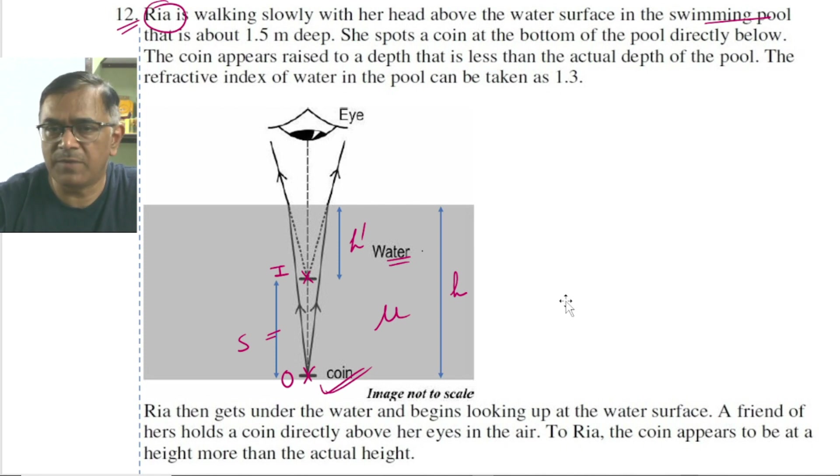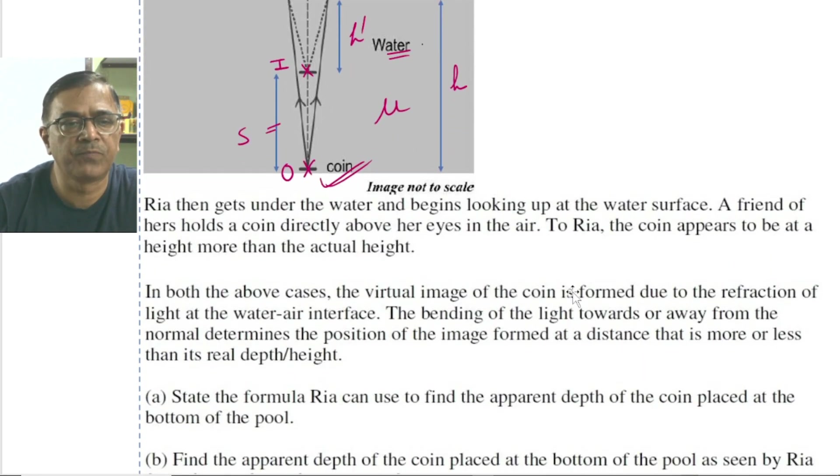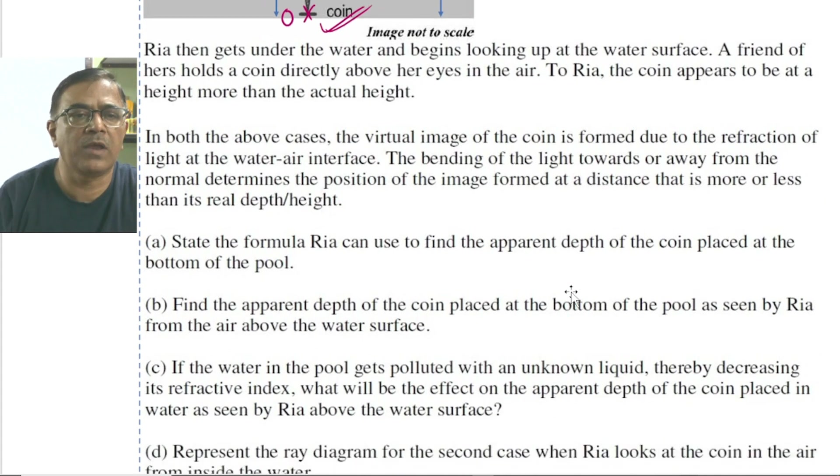Now let us see what we have been asked to solve in part A of the problem. We are supposed to state the formula that relates apparent depth and the real depth. The formula is the apparent depth h' is equal to h the real depth upon the refractive index.